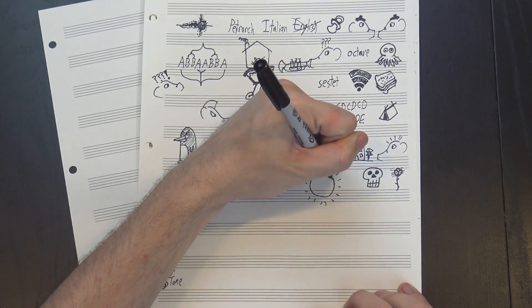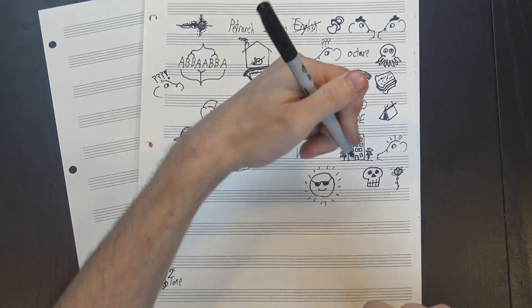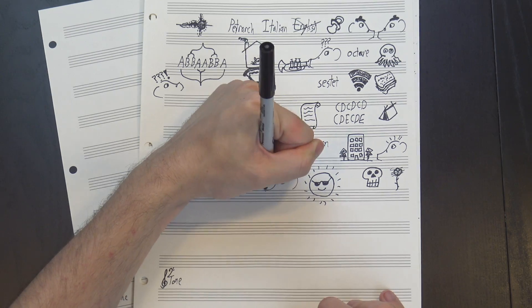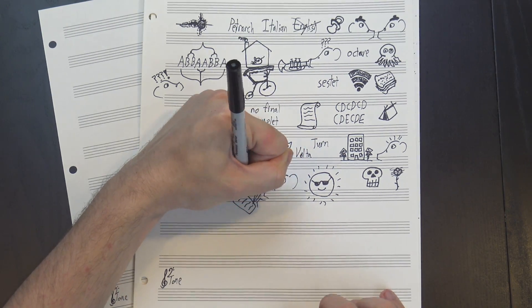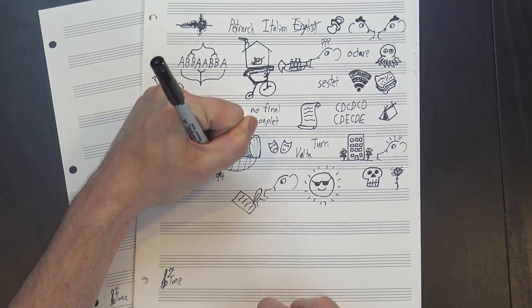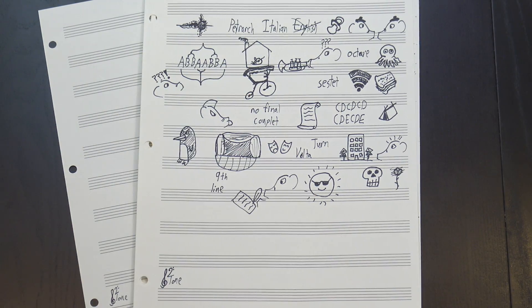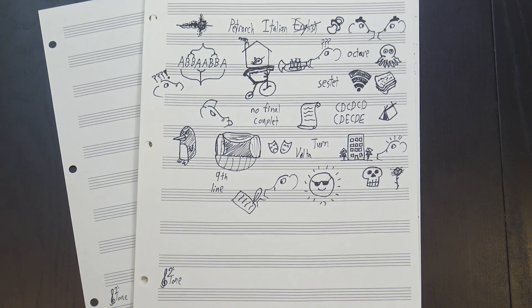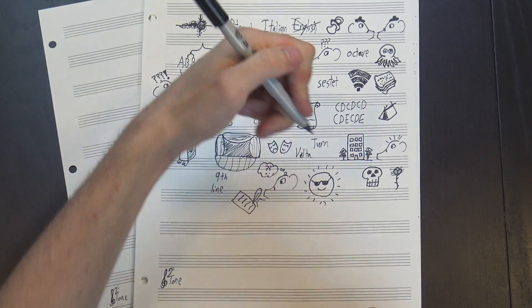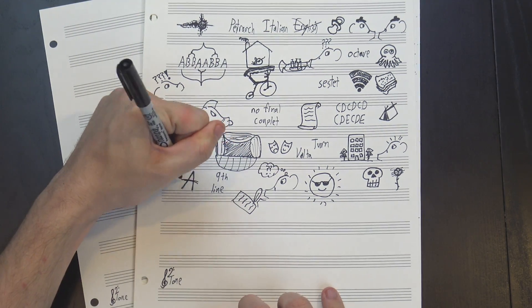However, at the start of the third quatrain, we get the line but thy eternal summer shall not fade, and from there on out, the subject and their beauty become immortalized by the poem itself. The volta is most commonly found in the Ninth Line, especially in Petrarchan sonnets, since that's where we switch to the sestet, but it can go anywhere, at least in theory. You can even leave it out if you're feeling especially punk rock.